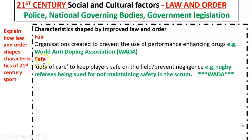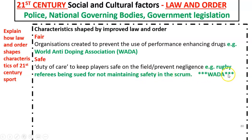The next way law and order impacts sport is it can make sport safe. For example, a rugby referee has a duty of care to keep players safe on the pitch — a rugby referee can be sued for not maintaining safety in the scrum. The World Anti-Doping Association is another example, keeping people safe by banning substances harmful to health, such as anabolic steroids.